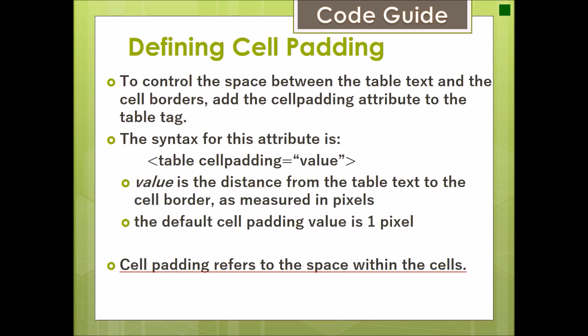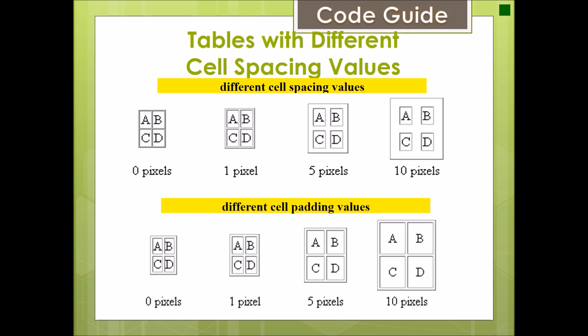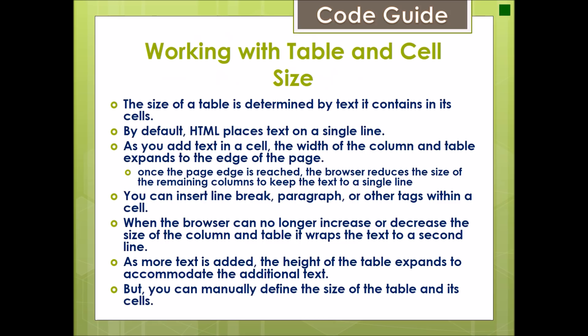Defining cell padding: cell padding controls the space between the table text and the cell border. The cellpadding attribute is used — table cellpadding equal to value, where value is the distance between the table text and the cell wall. At 10 pixels you can see the distance between the text and the cell wall clearly, and the distance between cells is also visible.